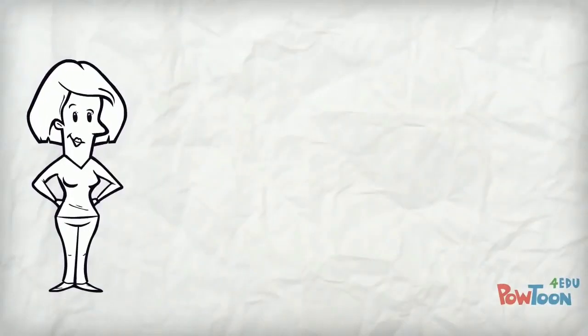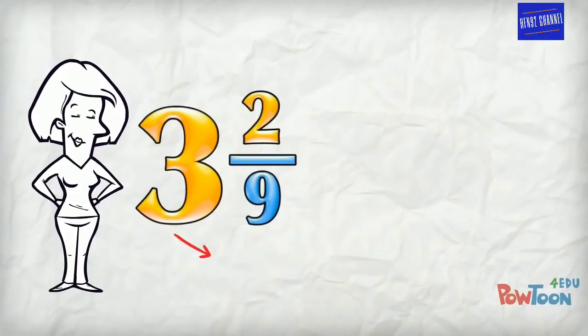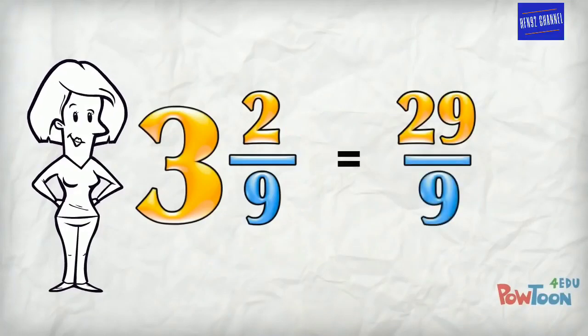So when you're changing a mixed number to an improper fraction, you take the whole number and you multiply it by the denominator. And then you add the numerator. And that's your total number of parts. It's your new numerator. Put it over the old denominator and you're all done.